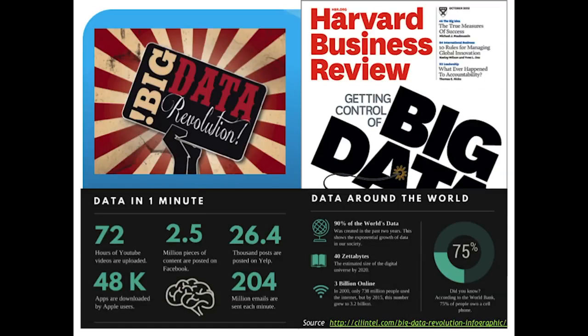There's no surprise people are talking about a revolution — sometimes called the big data revolution. We're talking about 40 zettabytes of data in the digital universe — a zettabyte is 10 to the power of 21. There's a huge amount of content posted on YouTube and Facebook, 200 million emails sent each minute. The entire software ecosystem is changing to tune to these amounts of data.